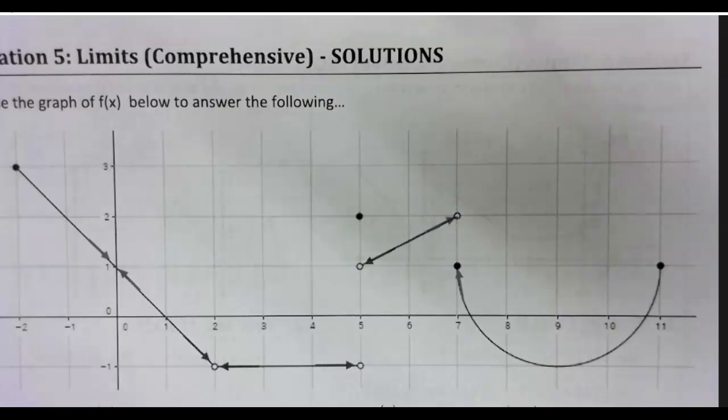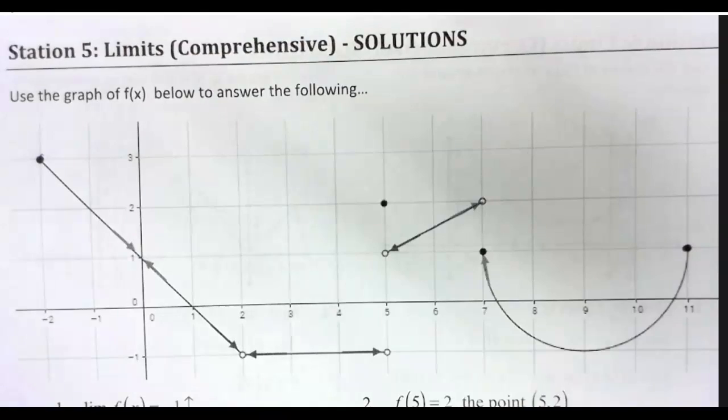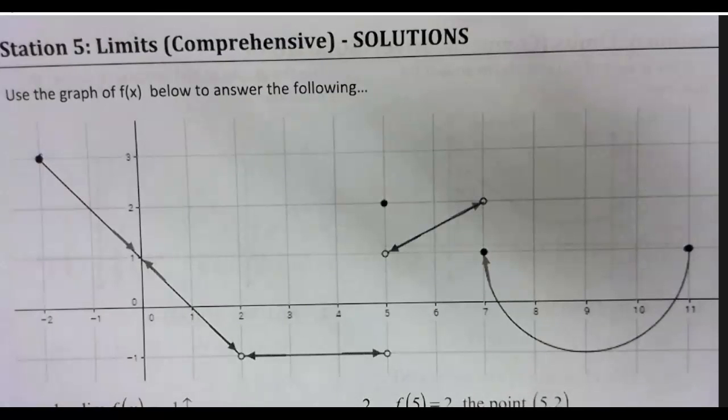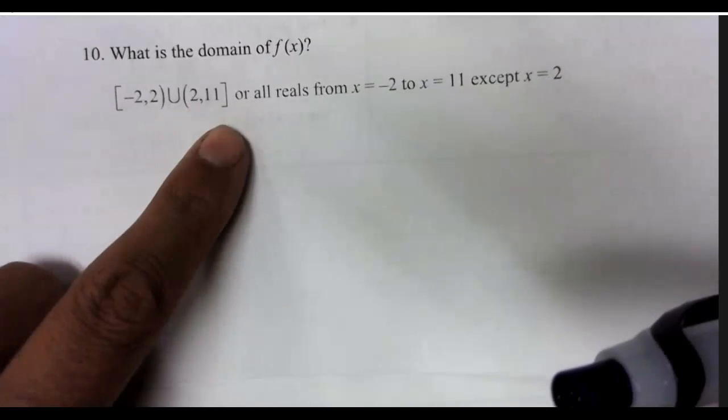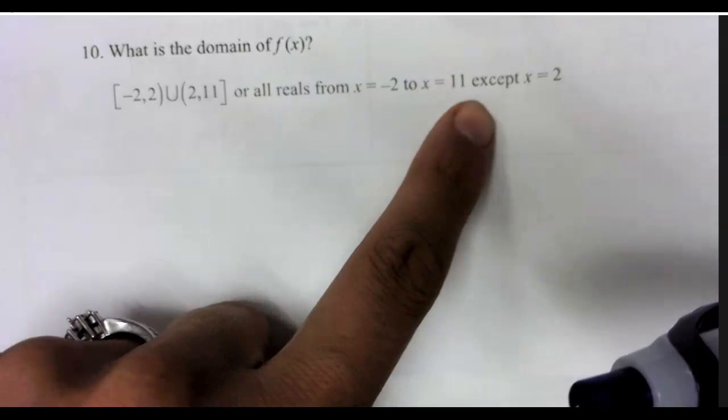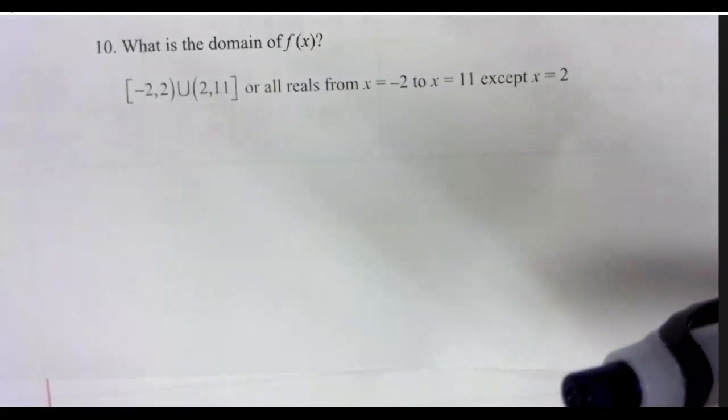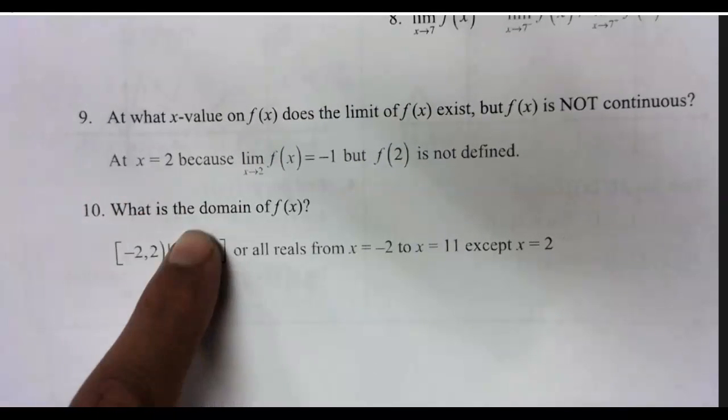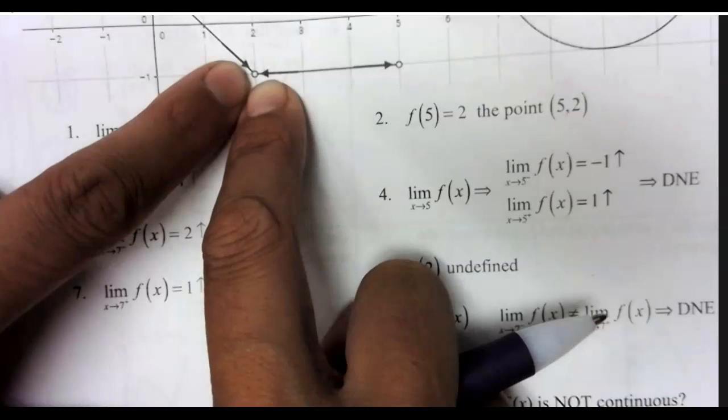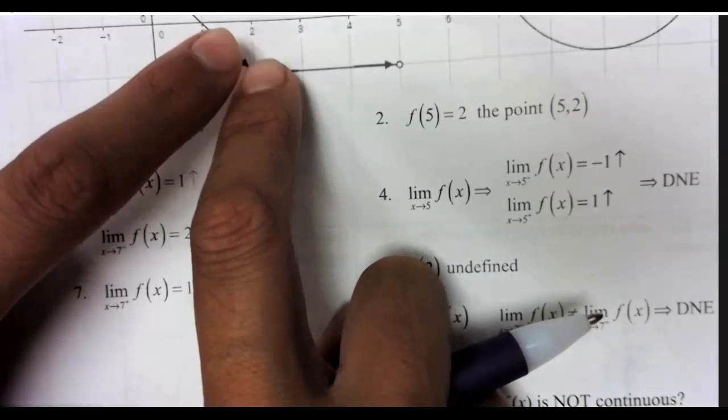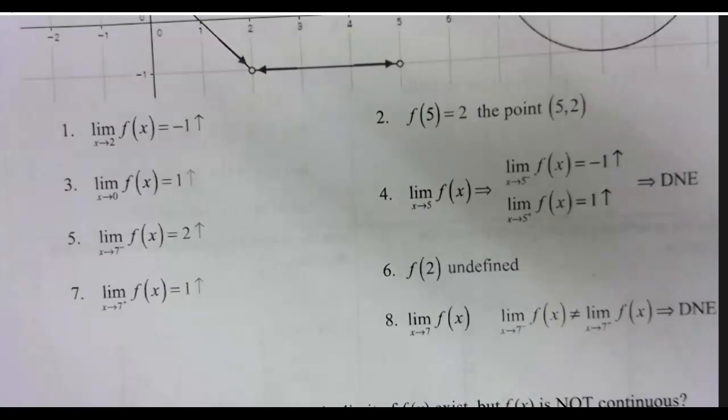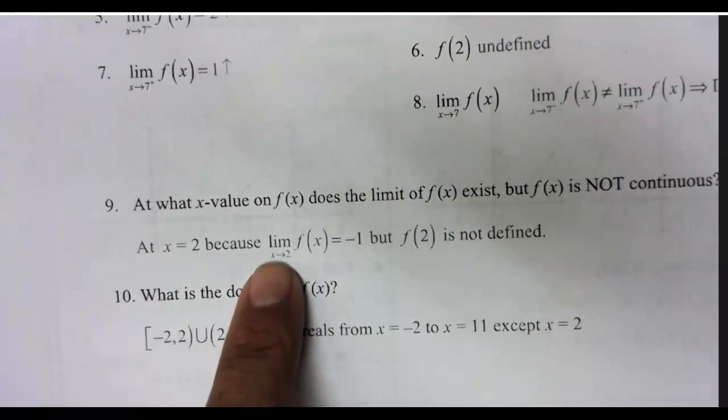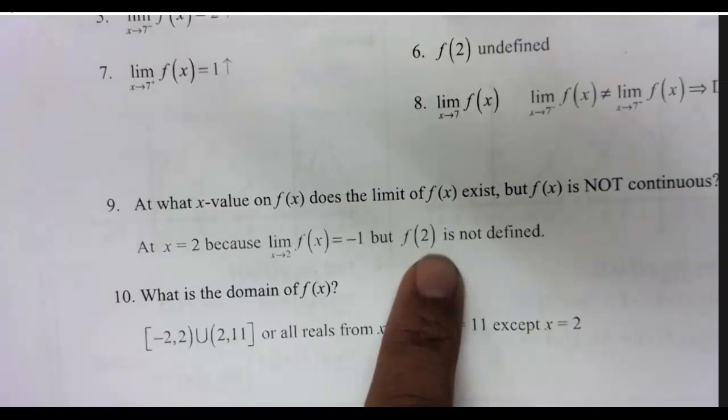Now, be careful because these have endpoints. It's not all real numbers. Yeah, it'd be negative 2 to 11. You could rate it either way. Negative 2 to 2, excluding 2. Or all reals from negative 2 to 11, except 2. So, on 9, it's kind of like 10. Again, the limit exists, but there's no point value. Therefore, it's not continuous, but the limit exists. For 9, just x equals 2. Because the limit exists and is negative 1, but f of 2 is not defined.